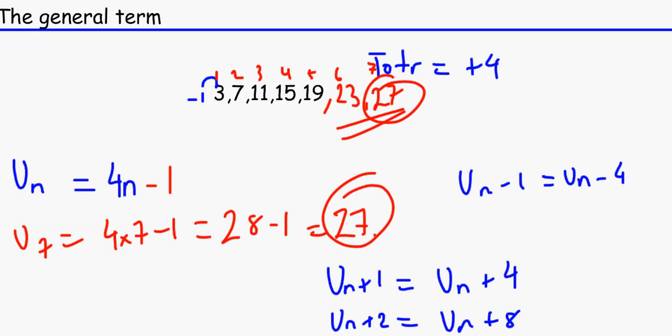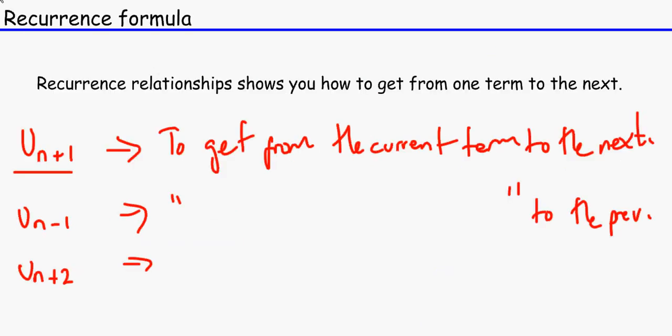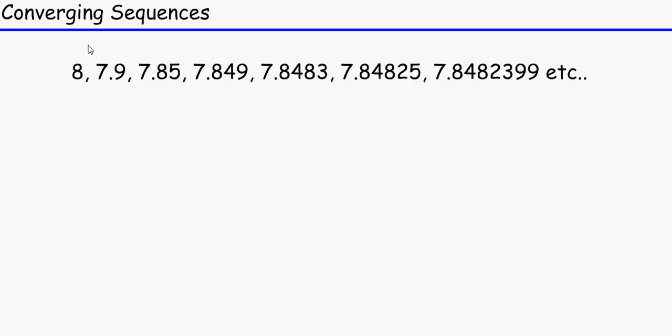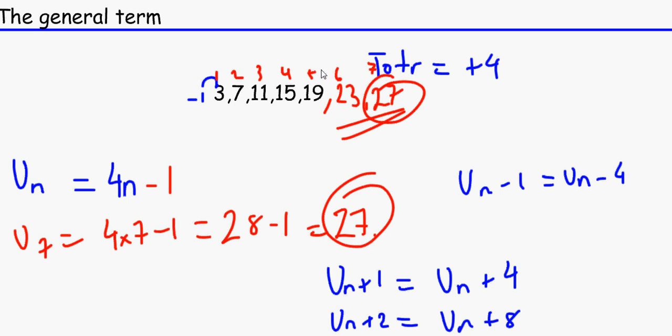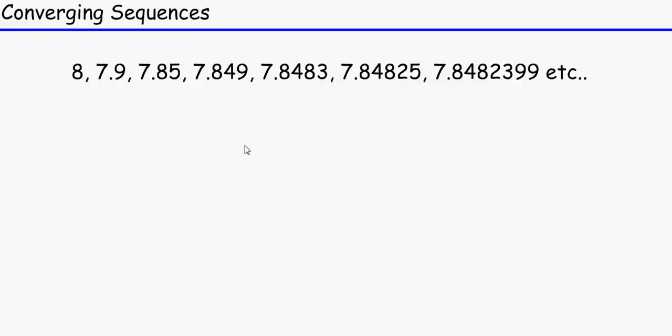Edexcel students, you can stop there. The next topic is converging and diverging sequences. Those sequences we just looked at diverge because they're not concentrating at a certain point. These ones — for example: 8, 7.9, 7.85, 7.849, 7.8483, 7.84825, 7.848239, et cetera — it seems as though they are coming closer and closer to a number.